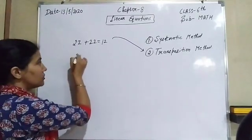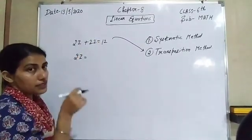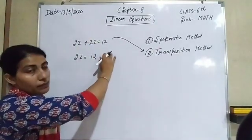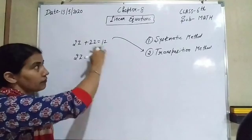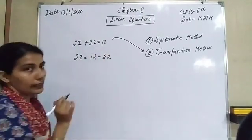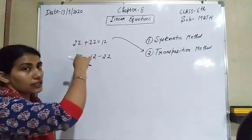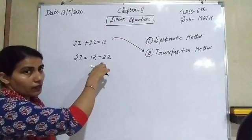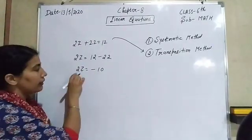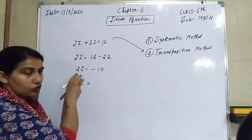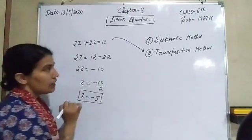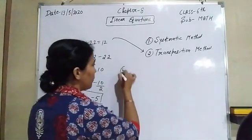According to the transposition method, you keep the variable on the left-hand side and transpose constants to the right. Here we have 2z + 22, and the positive 22 moves to the right side and becomes negative 22, so 2z = 12 - 22 = -10. Now 2 is multiplied on the left, so on the right it becomes division: z = -10/2, so the value of z is -5.